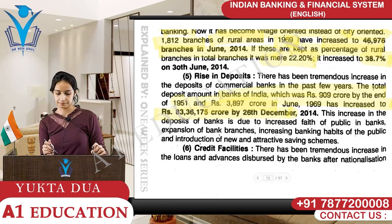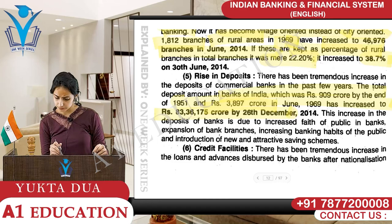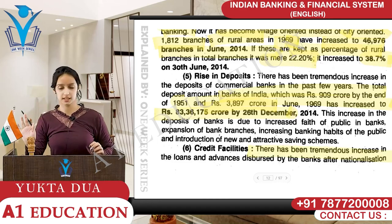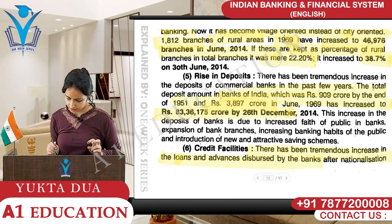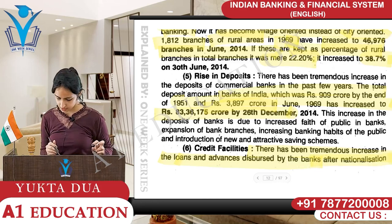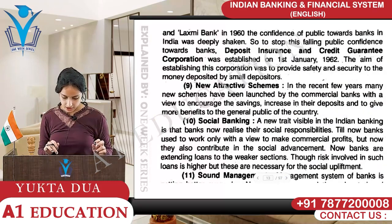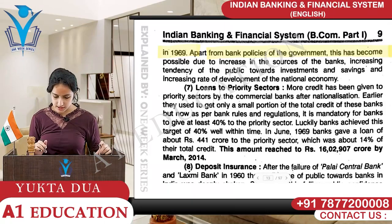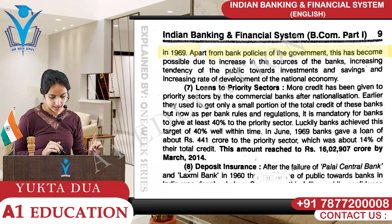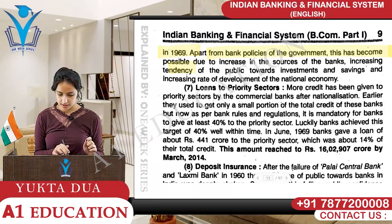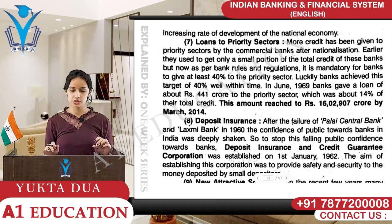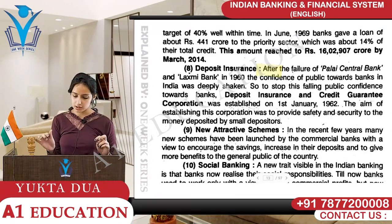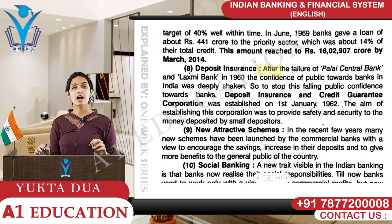Rise in deposits has occurred - proper statistics show rupees 9.09 crore by end of 1951, and rupees 3,897 crore in deposits with banks in June 1969. Credit facilities have also seen a tremendous increase in the loans and advances dispersed by banks after nationalization in 1969. Apart from bank policies of the government, this has become possible due to increase in the sources of banks' loans to the priority sector.